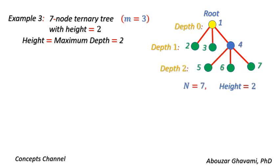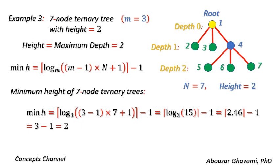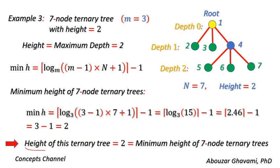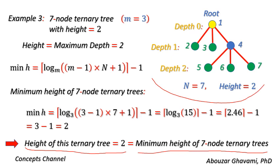As another example, let us consider a 7-node ternary tree with height equal to 2. In the previous example, we calculated the minimum height of 7-node ternary trees is equal to 2. The height of this ternary tree is equal to 2, which is also equal to the minimum height of 7-node ternary trees. Thus, this 7-node ternary tree is one of the 7-node ternary trees that has minimum height.